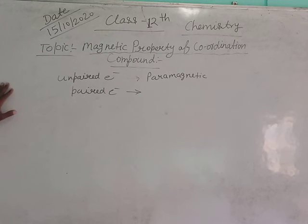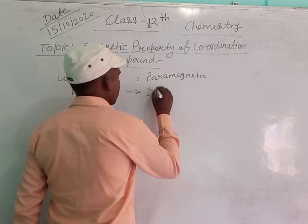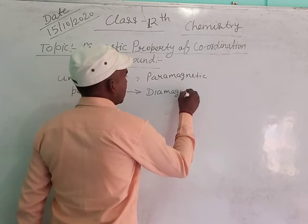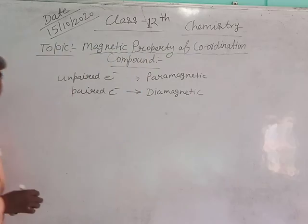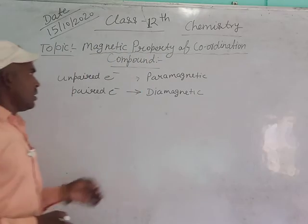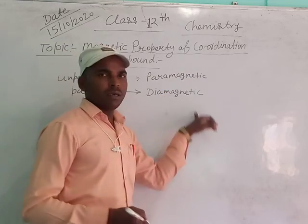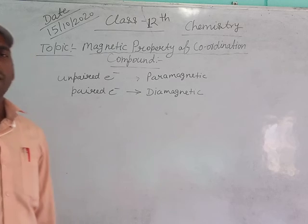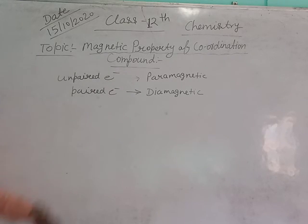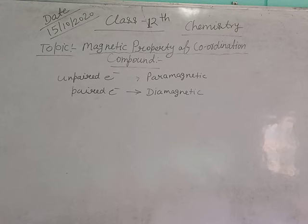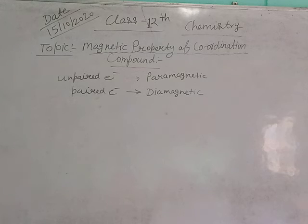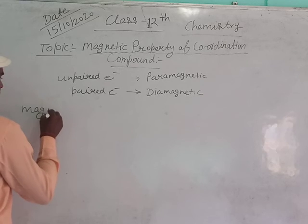We know coordination compounds can also be diamagnetic. In a previous class, we studied which are paramagnetic and which are diamagnetic — considering the unpaired electrons and paired electrons in the d-orbitals.